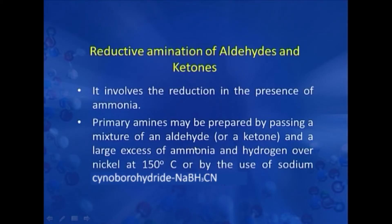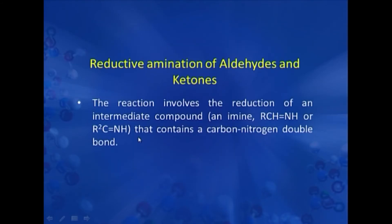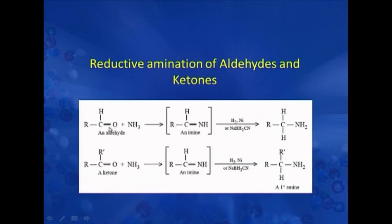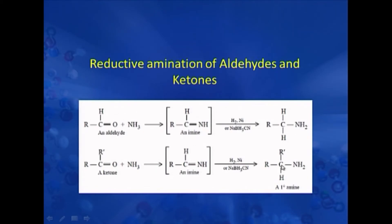Another method for the preparation of amines is via reductive amination of aldehydes and ketones. Primary amines may be prepared by passing a mixture of an aldehyde or ketone and a large excess of ammonia and hydrogen over nickel at 150°C, or by the use of sodium cyanoborohydride. The reaction involves reduction of an intermediate imine — an aldehyde reacts with ammonia to form an aldimine, which upon further reduction produces a primary amine; a ketone reacts with ammonia to form a ketimine, which upon reduction again forms a primary amine.